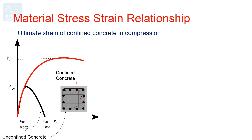The ultimate strain epsilon cu is defined as the strain at which the first hoop fracture occurs. This is determined by tracing the work done on the confined concrete and longitudinal steel when deformed in compression. When the work done exceeds the available strain energy of the transverse reinforcement, hoop fracture occurs and the section can be considered to have reached its ultimate deformation. This requires knowledge of the stress-strain relationship of the reinforcing steel as well.